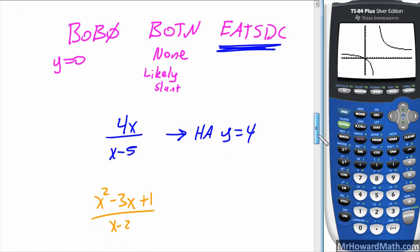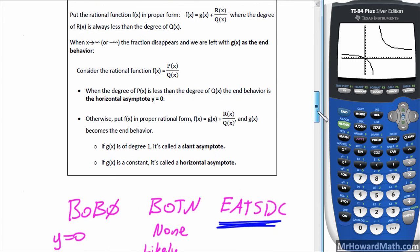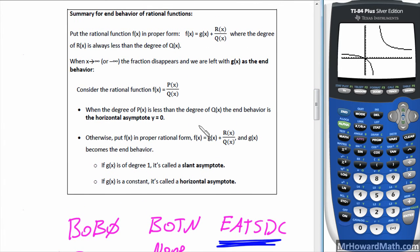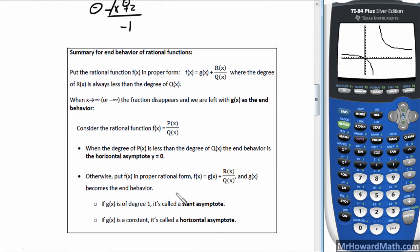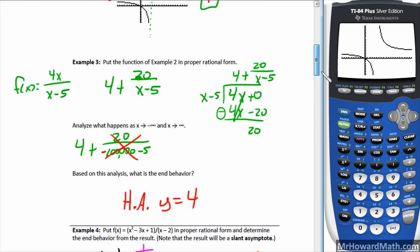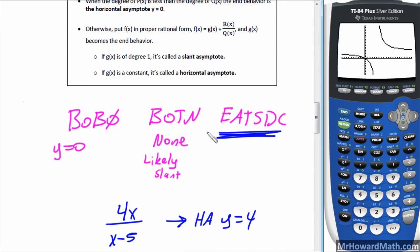And one other thing to note, if it's bigger on top by 1 degree, so degree 2 over degree 1, so the degree of the numerator is 1 larger than the denominator, that's when you're going to have a slant. And these notes right here are telling you that. If, when you work this out, when you do your long division, if in front of the remainder, g of x is what they're calling it, that's the part in front of the remainder. If g of x is of degree 1, it's a slant asymptote. If g of x is a constant, it's a horizontal. So that's what we found up here. Degree 1 was a slant. That's what they're saying here. This part right here. Degree 1, slant, constant like we had here. Then it's a horizontal. But you can still use this acronym, Bobo Botten Eats DC. And we will apply that more in later lessons.